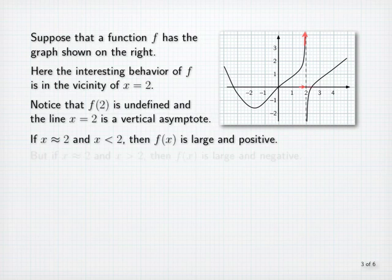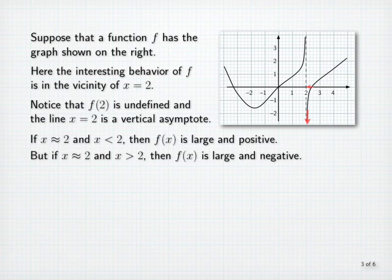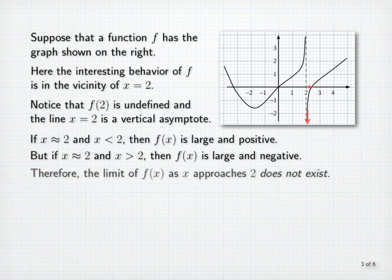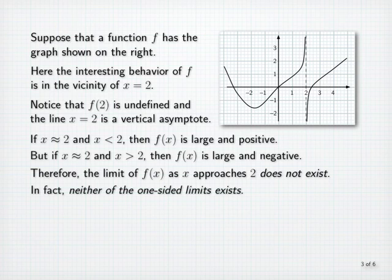If x is close to 2 while greater than 2, then f of x is large and negative. Therefore, there is no number that can serve as the limit of f of x as x approaches 2. That is, the limit does not exist. In fact, neither of the one-sided limits as x approaches 2 exists. However, we can describe the behavior of the function near the vertical asymptote in terms of infinite one-sided limits.